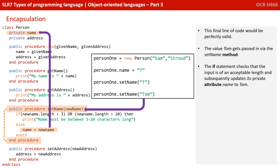This final line of code will be perfectly valid. The value Tom gets passed in via the setName method. The if statement checks that the input is of an acceptable length and subsequently updates its private attribute name to Tom.